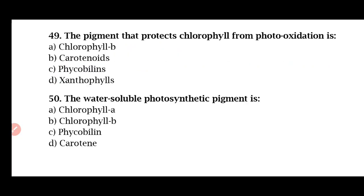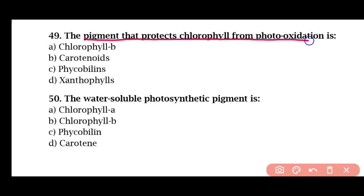Question 49: The pigment that protects chlorophyll from photo-oxidation is — Chlorophyll B, carotenoids, phycobilin, or xanthophyll. The correct answer is option B. Carotenoids protect chlorophyll from photo-oxidation.